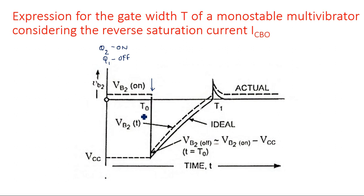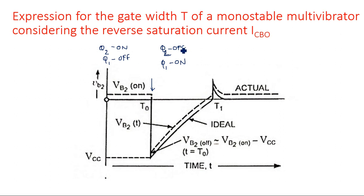At time instant T0, we apply a negative-going triggering pulse at base 2. This negative pulse changes the state of transistor Q2 — Q2 comes into the OFF state and Q1 comes into the ON state. As Q2 goes off, the voltage across its collector becomes high and is applied to Q1, bringing Q1 into the ON state. The capacitor connected between VCC and base 2 then begins to charge. This is the charging period.